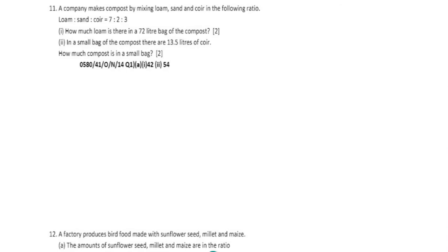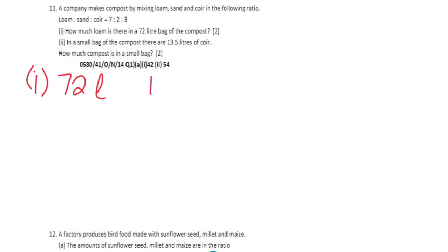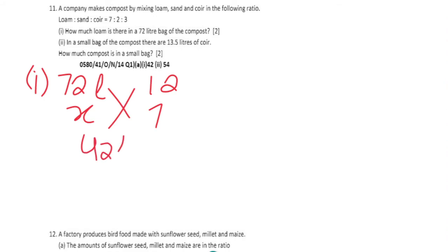Question 11: A company makes compost by mixing loam, sand and coal in the ratio 7:2:3. Part 1: how much loam is there in a 72-litre bag of compost? 72 litres represents 7 plus 2 plus 3, which is 12 parts. Loam is represented by 7 parts, so cross multiply 72 times 7 divided by 12, giving us 42 litres of loam.